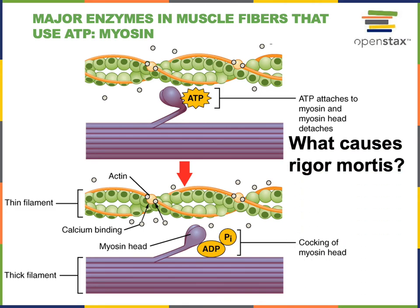What causes rigor mortis is depletion of ATP. Without ATP available to bind to the myosin heads, the third step, cross-bridge attachment, is not possible. So without cross-bridge attachment, myosin heads remain bound to actin, causing the rigid muscles characteristic of rigor mortis.